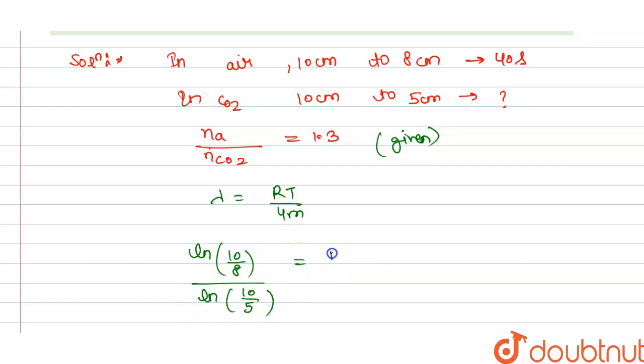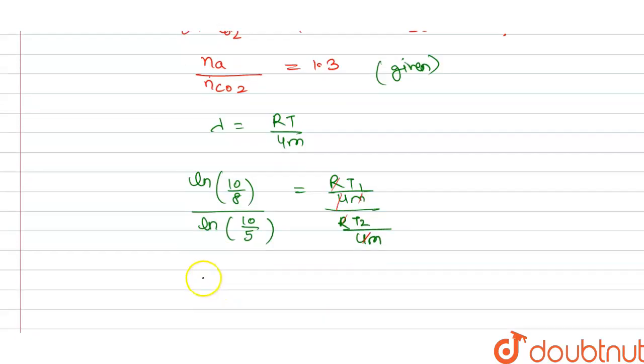will equal to Rη_1t_1/4m divided by Rη_2t_2/4m. On solving this, R and 4m will cancel out, so we get t_1 divided by t_2